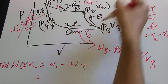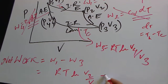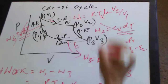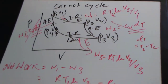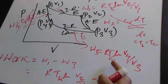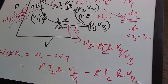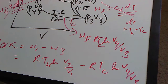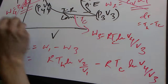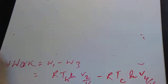The net work is W = W1 − W3. W1 is R·TH·ln(V2/V1) and W3 is R·TC·ln(V4/V3). So net work = R·TH·ln(V2/V1) − R·TC·ln(V4/V3). This is the work done in the Carnot cycle.